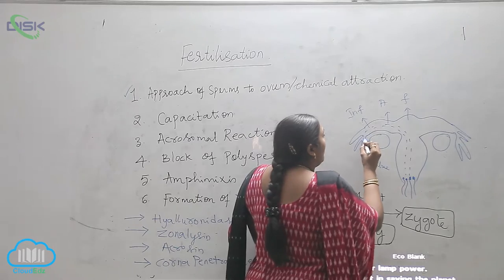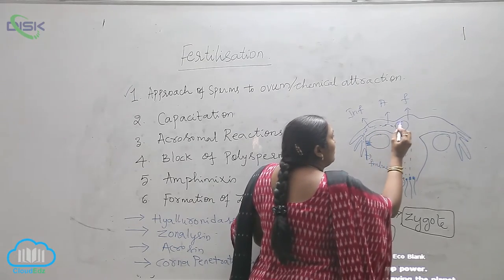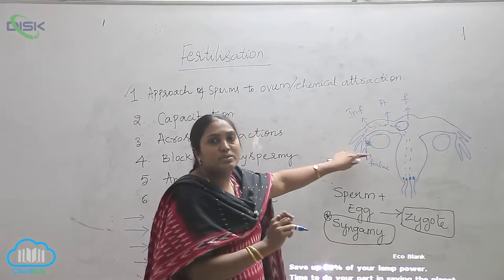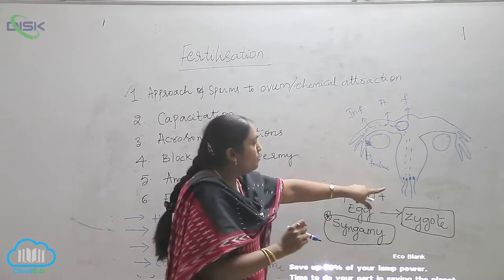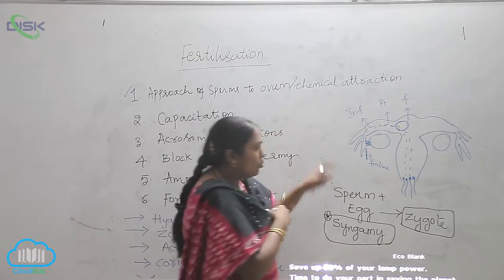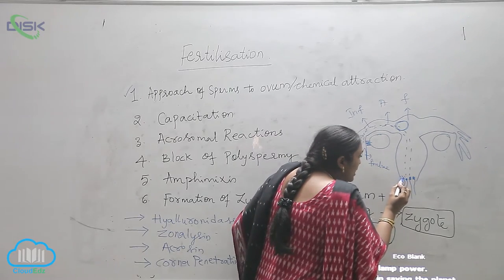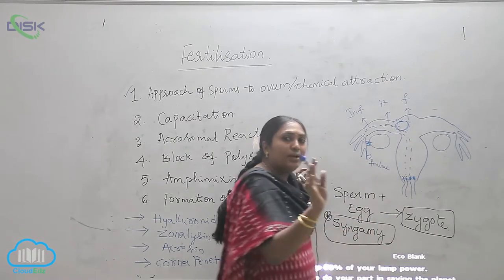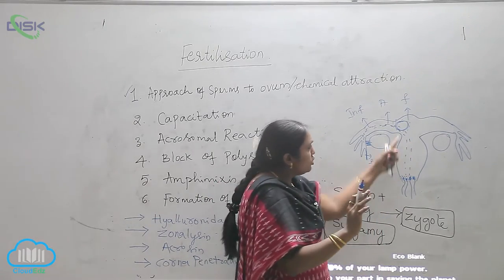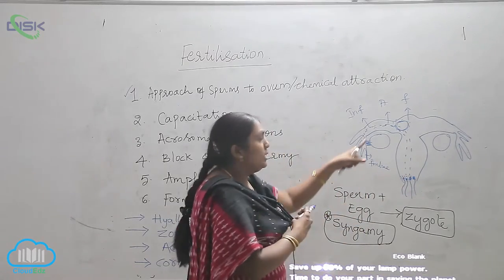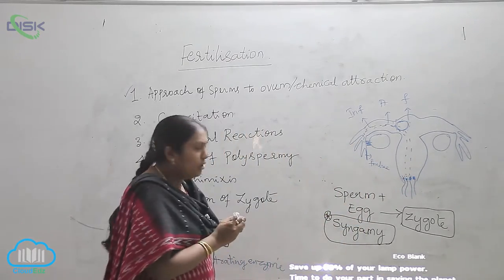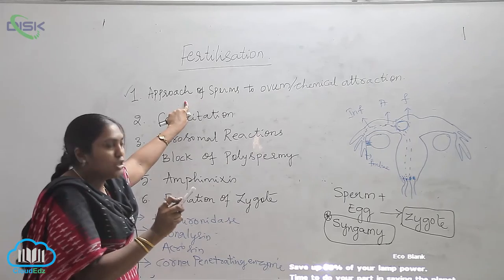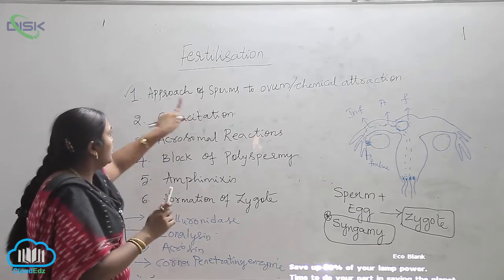The egg will travel and be lodged in the fallopian tube. Only human sperms have the capacity of identifying the egg by means of chemicals. On the sperms there will be chemicals scattered, and on the egg chemicals will also be present. So this chemical attraction pulls the sperms nearer to the egg region. This is the first step — approach of sperms to the ovum through chemical attraction — and hence fertilization begins.